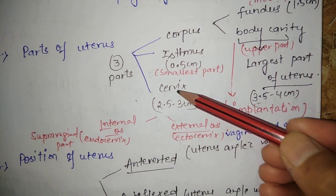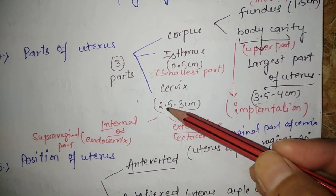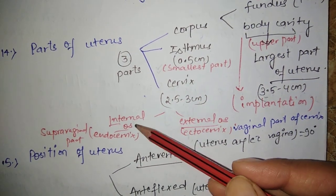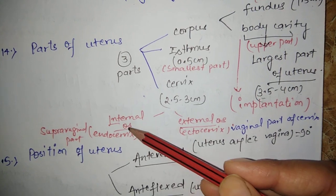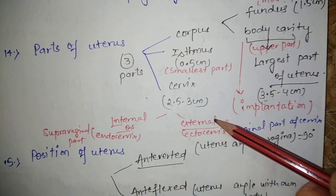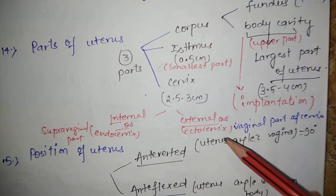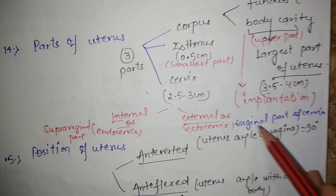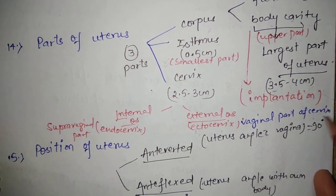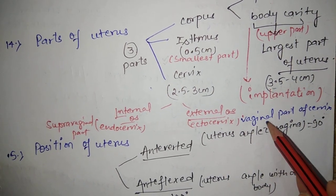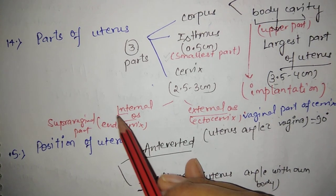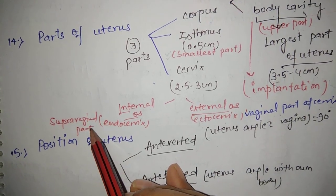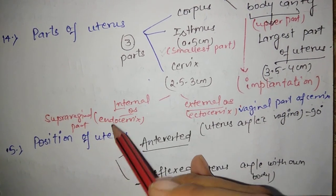The cervix has a length of 2.5 to 3 cm and has two os — os means opening — internal os and external os. External os is also known as ectocervix, that is the vaginal part of the cervix, the opening near the vagina. Endocervix is the supravaginal part, above the vagina.